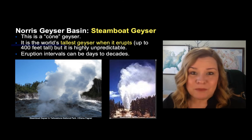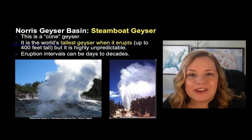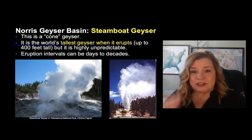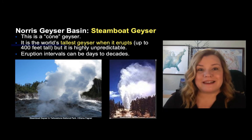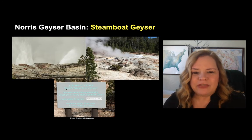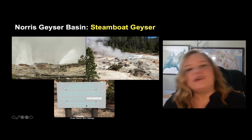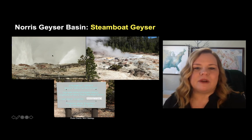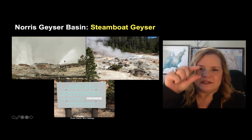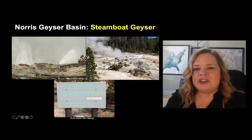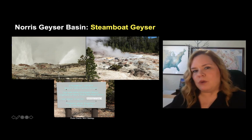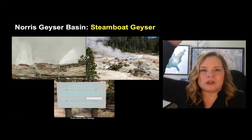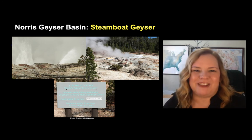Steamboat Geyser is a cone geyser — similar to Old Faithful in that way, but very different because one is predictable and one is not. When you get there, signage will tell you when it last erupted. The daily eruptions are little ones, not the full eruption. One way you know you're coming up on Steamboat is you can look for a big plume of steam.